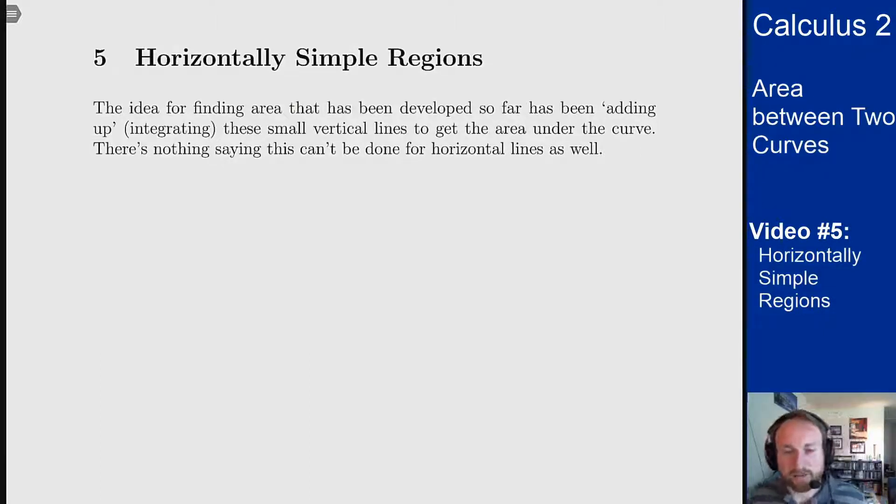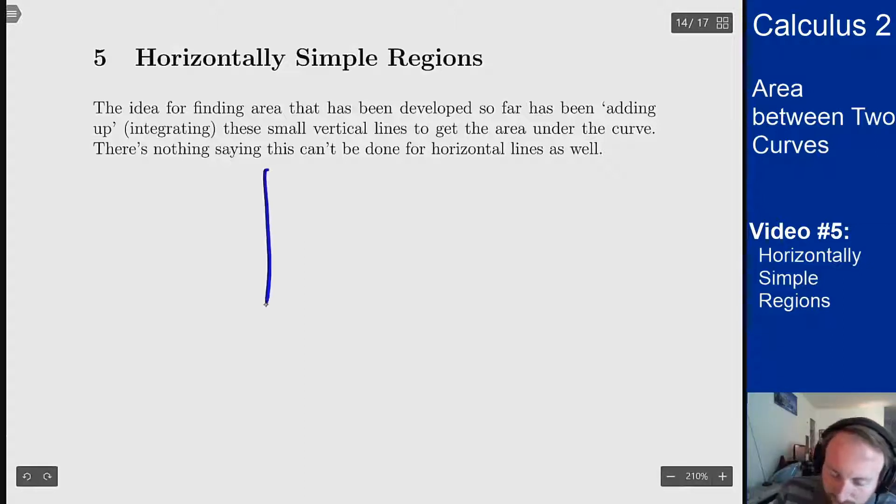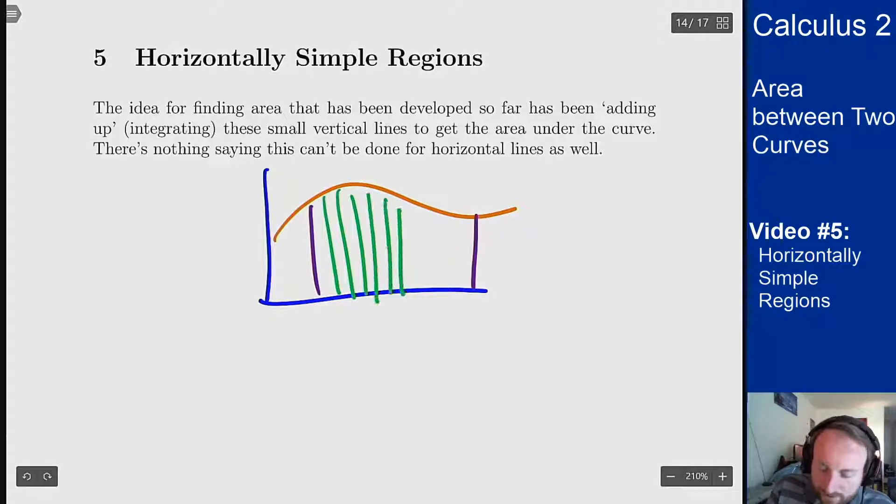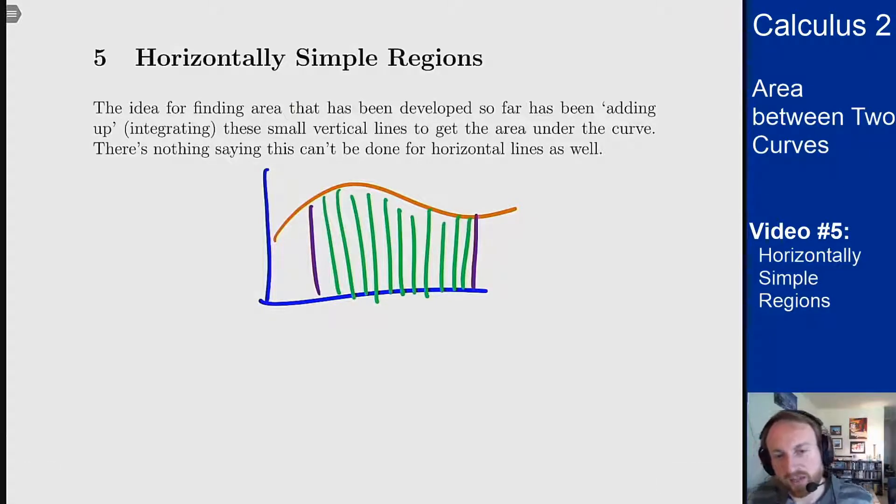Our idea for area so far has been the same thing as we did for integrals in the first place. Take little rectangles that are horizontal, shrink that width to zero, take infinitely many of those rectangles, and that gives you the area of the curve. Basically the idea of I want to take my graph here and I'm going to add up a whole bunch of little strips vertically to get the area. Now that makes a lot of sense for the picture we have here, but for some regions it might make more sense to think about this not as little vertical strips but as little horizontal strips.